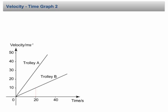In a velocity-time graph, the gradient of the graph represents the acceleration. The higher the gradient, the higher the acceleration; the lower the gradient, the lower the acceleration. For example, in this graph, the acceleration of trolley A is higher than trolley B because the gradient of trolley A's graph line is higher than the gradient of trolley B.